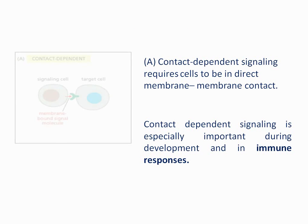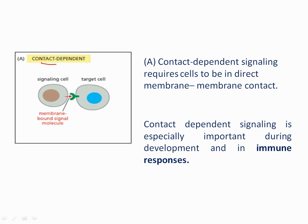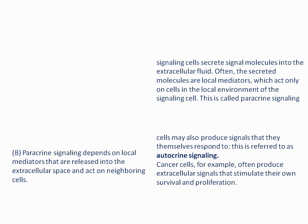In contact dependent signaling, this type of signaling requires direct membrane-to-membrane contact via the signaling molecule, which is why it is called contact dependent signaling. It is important during development and immune responses.